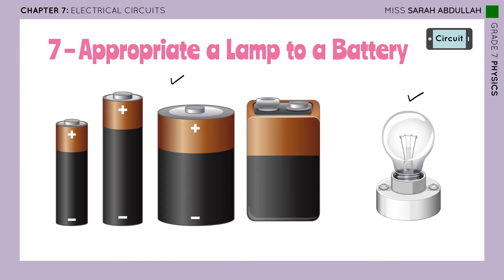You remember last time we talked about a number called the voltage, written on different batteries. Let's say this one is 1.5 volt, 2 volt, 4.5 volts, 9 volts. So what do these voltages mean? There is an entire chapter dedicated to the voltage, so I'm not going to explain it a lot now. All I'm going to say is that the voltage is the pressure that pushes the electrical current in a circuit. The bigger the voltage, the more electricity it pushes in the circuit.